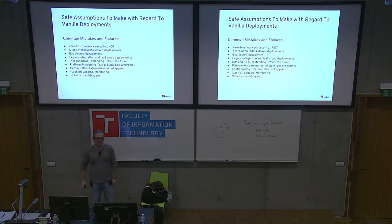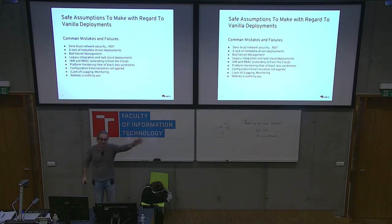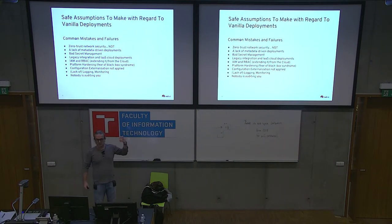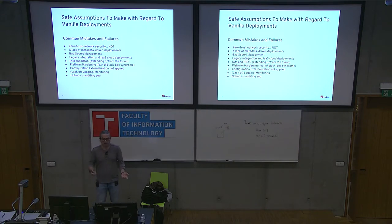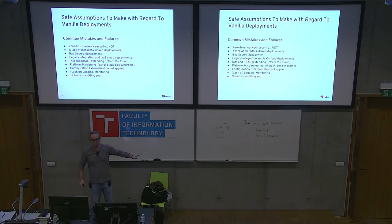Lack of logging and monitoring: most Kubernetes deployments don't have meaningful, durable log data at every layer — container, application, and cluster level. That's something you can really exploit. Auditing at the API server level through configured audit policies is rarely done, and even if it were, you wouldn't get much useful information when running with elevated rights. So whatever you're doing, make sure nobody is watching you.